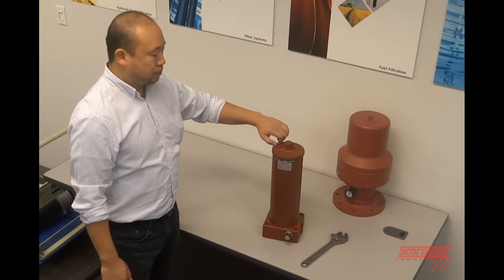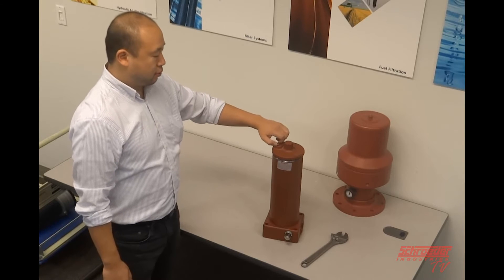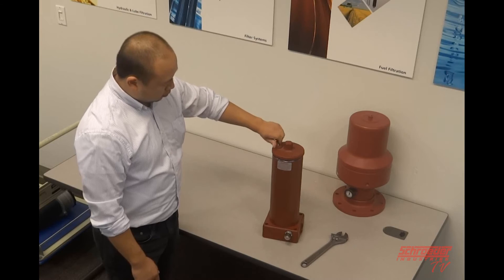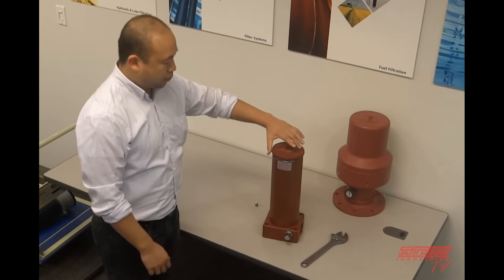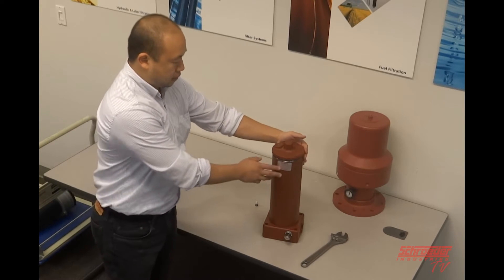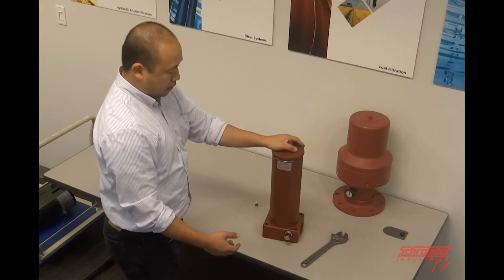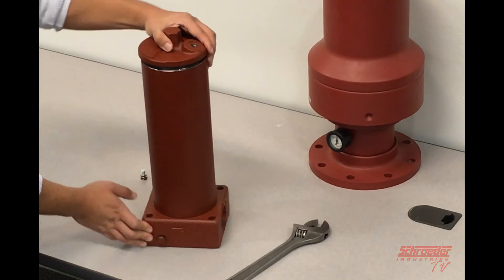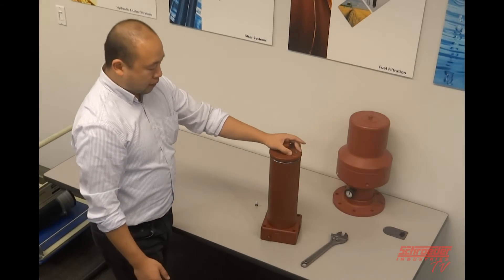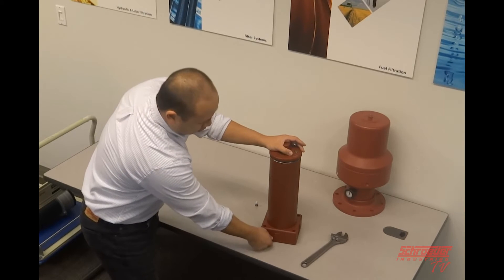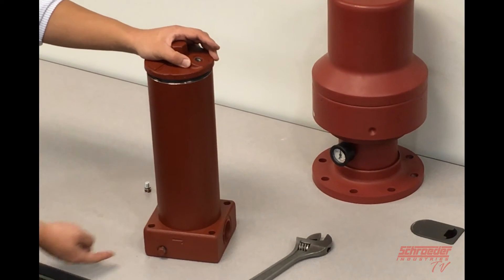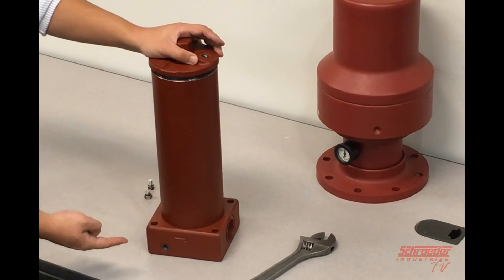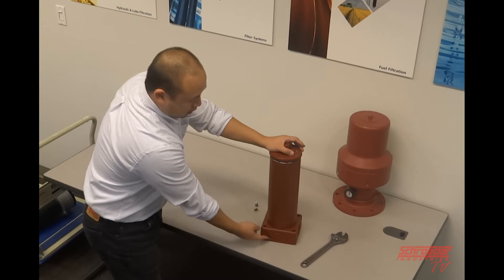So first, we will take the bleed plug in the cap to help alleviate the pressure in the housing. So that will help the pressure internally release before we change the filter itself. And we want to actually, even though it's a base ported filter, we still want to drain the fluid before we change the element. So we'll remove the drain plug in the cap here. And the fluid will drain out from here. And once fluid stops coming out, we can use a torque wrench.